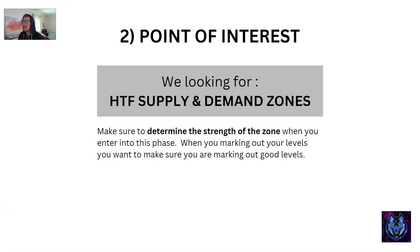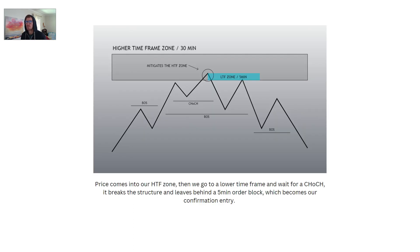Number two: points of interest. We're looking for higher time frame supply and demand zones. How we determine the strength of the zone is the displacement — the momentum moving away from the zone. We get the contraction phase and then the displacement which shows there's volume in the market. We mark out the indecision candles, or the last buy candle before the up move or the last sell candle before the down move — these become our zones that we stretch out. Here is an example: we had a massive displacement that left behind a higher time frame zone. We marked it out on the 30-minute chart, and this becomes our point of interest — there is liquidity here because of the displacement and the order block left behind, possibly an indecision candle, an engulfing candle, or even an imbalance.